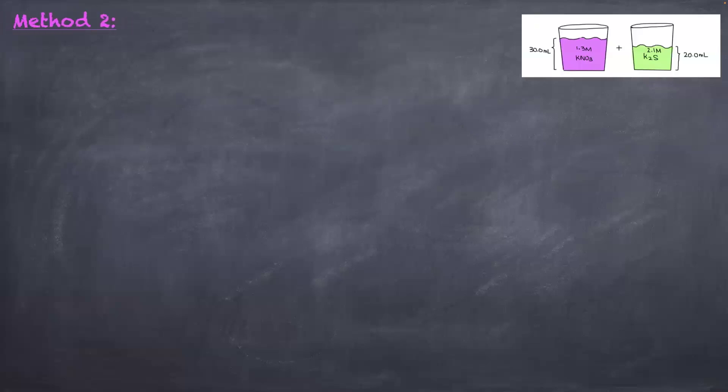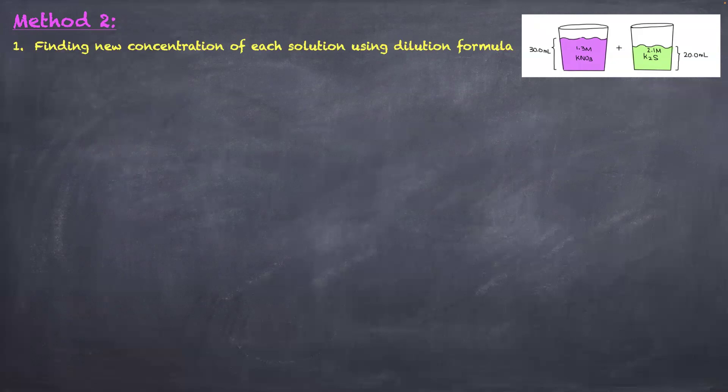There is also a second method using the dilution formula. The first step is to find the new concentration of each solution using the dilution formula, because the two volumes are being combined into a new total volume, so the concentration will change. I have a previous video explaining how dilution works — I'll tag it here if you want to refer to it.